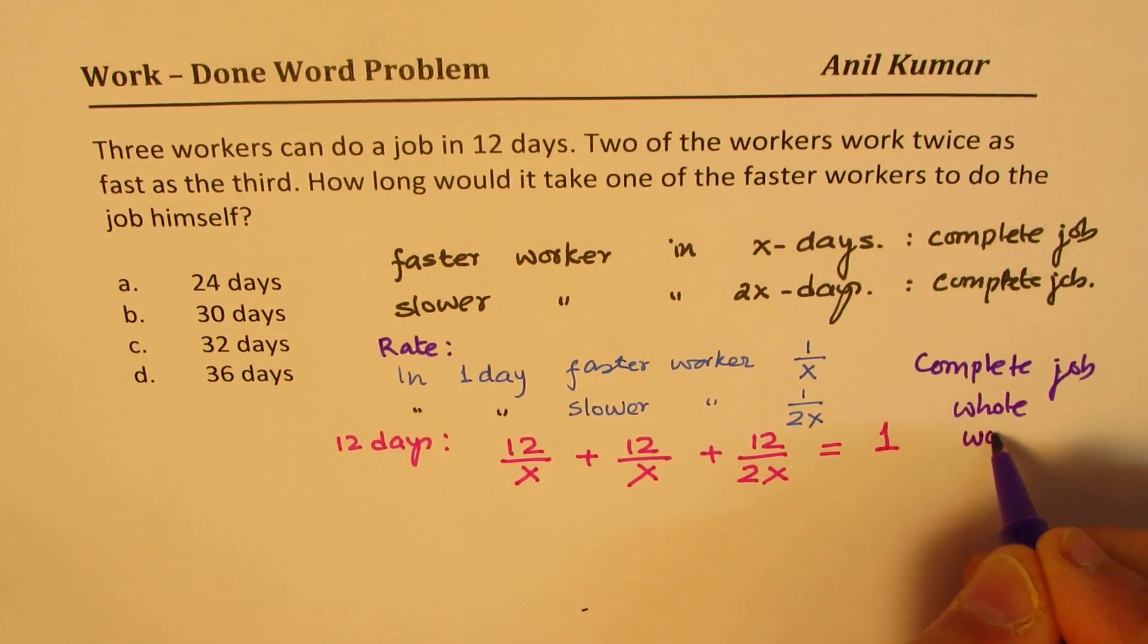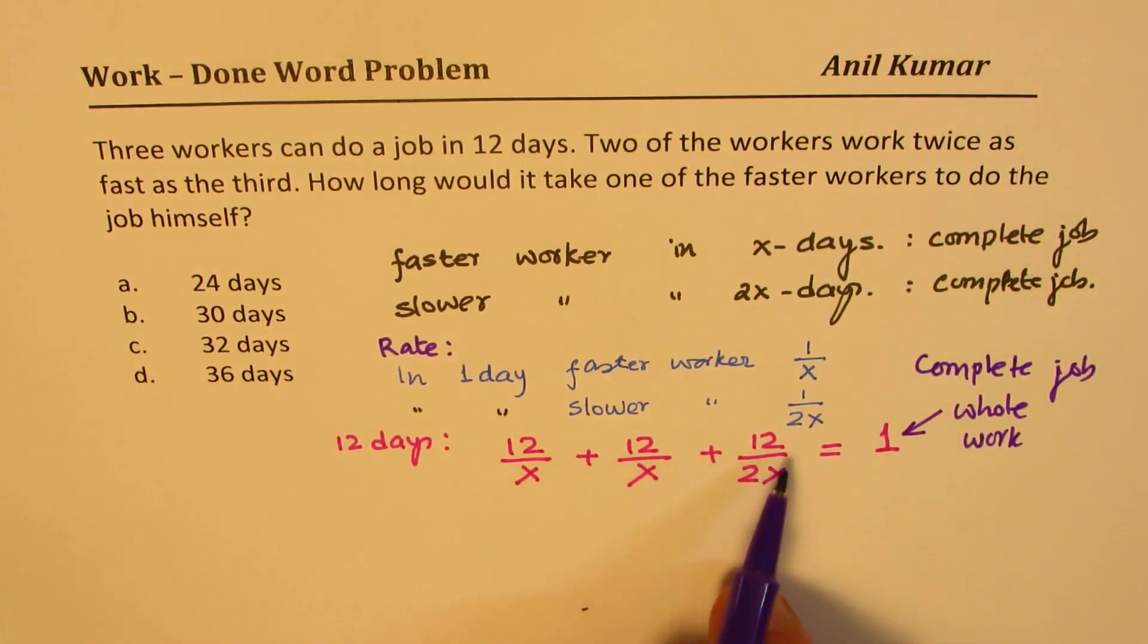One indicates complete job, whole work. So in 12 days when they work together, the faster worker will do 12/X portion of the job, the slower will do 12/2X portion of the job, and you get your equation.